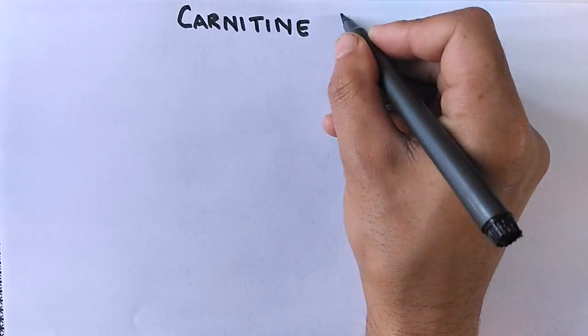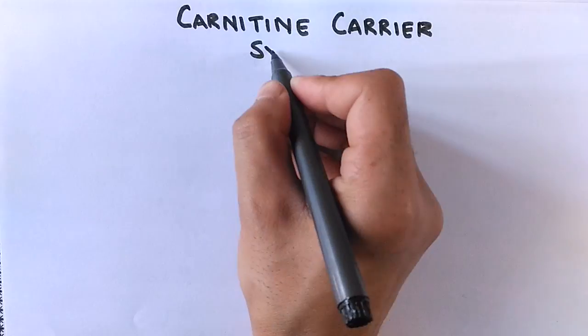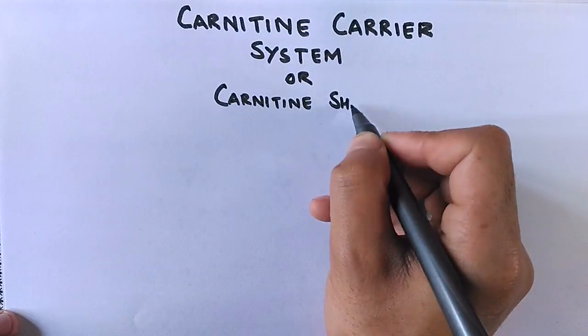Hello friends. Since we have been discussing fatty acid metabolism, we are now at a point where fatty acids have been activated, as discussed in the previous video. Now let's move on and see how these fatty acids are transported into the mitochondrial matrix. Here we will be discussing about the carnitine carrier system, or simply the carnitine shuttle.